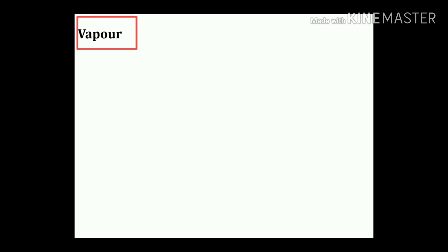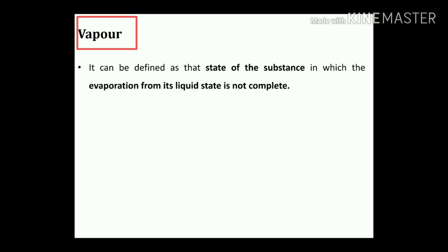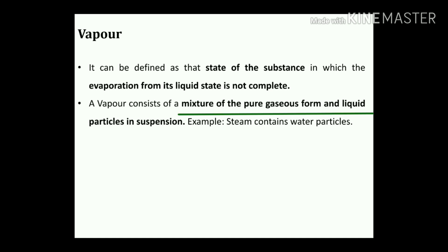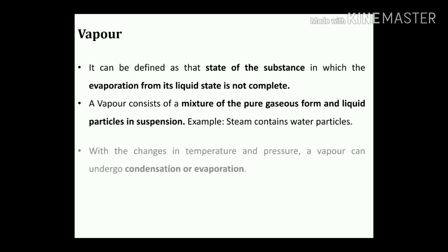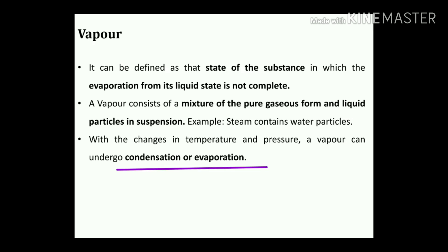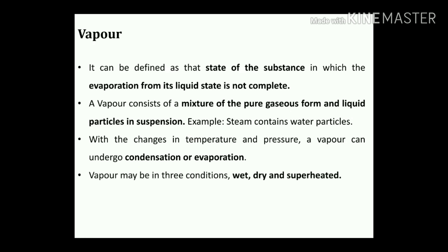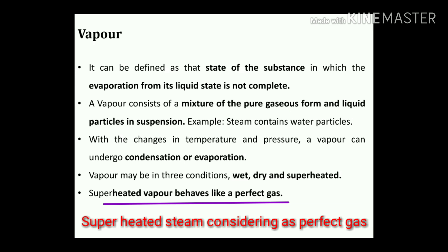Before starting with the different gas laws, let's cover some terminologies: the difference between vapor, gas, and perfect gas. Vapor can be defined as the state of a substance in which evaporation from its liquid state is not completed. A vapor consists of a mixture of pure gas and liquid particles in suspension — for example, steam contains water particles. With changes in temperature and pressure, a vapor can undergo condensation or evaporation. Vapor may be in three conditions: wet, dry, and superheated. Superheated vapor behaves like a perfect gas, with no moisture present.